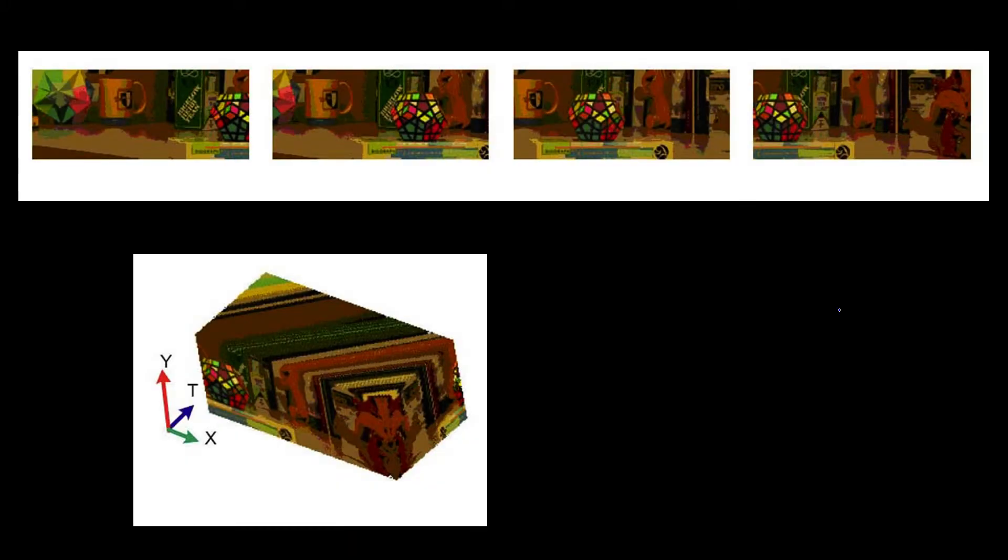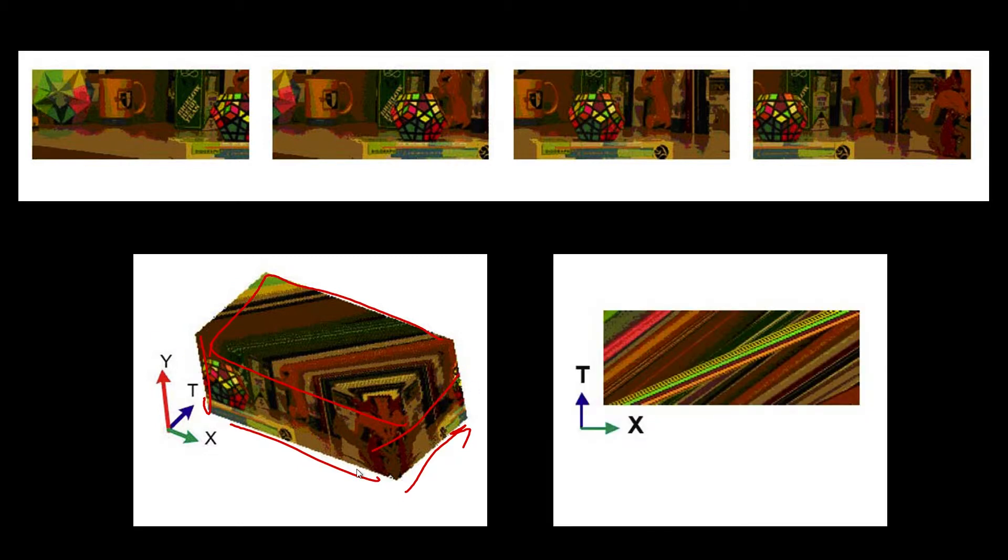So if I were to take all those images and build a cube of them, this is that same cube. So here we have x and y and we stack them in time this way. And here's just the top of them. And I'm just going to take a slice, one of the slices through there, and that looks like that.